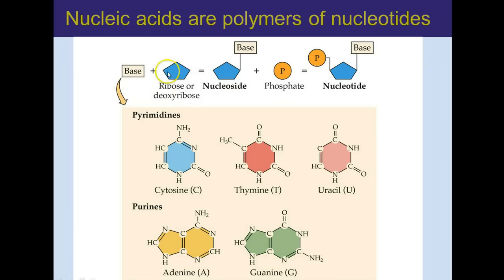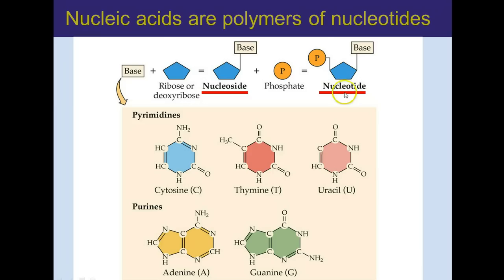A base with a five-carbon sugar — either ribose or deoxyribose, and we'll have a closer look at that in a minute — is a nucleoside. A base with a sugar and a phosphate is a nucleotide, with maybe not just one phosphate but one, two, or three phosphates. So a nucleoside is a base and a sugar; a nucleotide is a base, a sugar, and one or more phosphates.